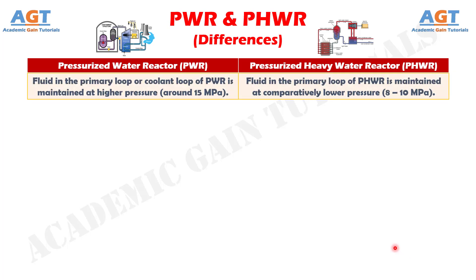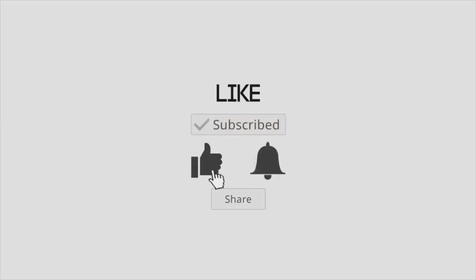Difference number 6. The fluid in the primary loop or coolant loop of a pressurized water reactor is maintained at higher pressure, around 15 MPa. Whereas, the fluid in the primary loop of a pressurized heavy water reactor is maintained at comparatively lower pressure, around 8–10 MPa.